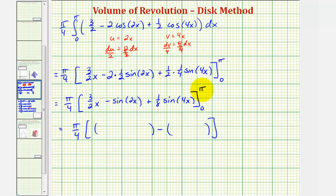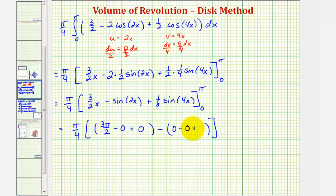Now we'll evaluate this at pi and zero and find the difference. When x equals pi, we have three pi over two, then sine two pi which is zero, so minus zero, and sine four pi which is zero, so plus zero. When x is zero, all three terms are zero, so we have zero minus zero plus zero. This works out to pi over four times three pi over two, so the exact volume of our solid is three pi squared divided by eight.